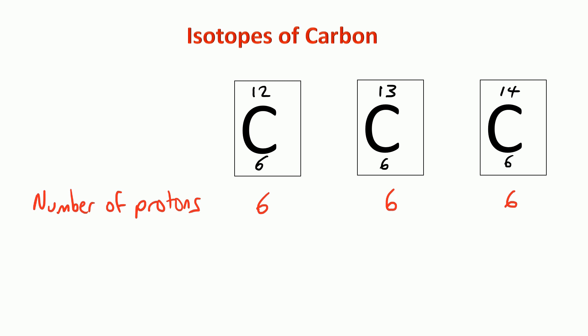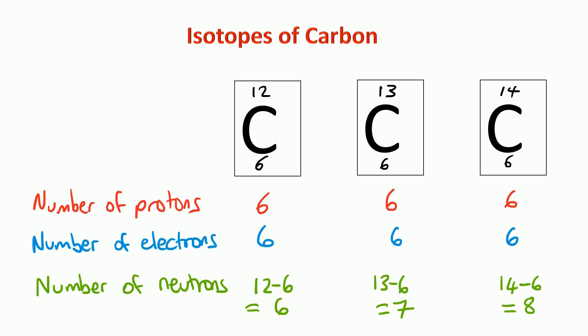Back to this example, we can also see there are six electrons for each type of carbon. Now when we look at the number of neutrons, we do the mass number take away the atomic number. So the first type of carbon has six neutrons, the second type has seven, and the third type has eight neutrons. We can see they've got the same number of protons and electrons, but different numbers of neutrons.